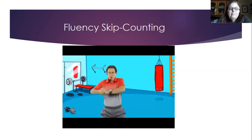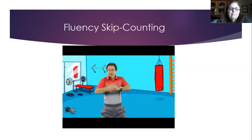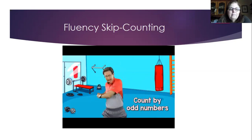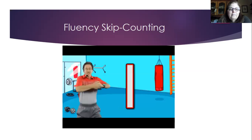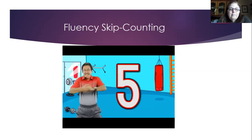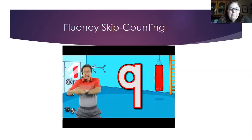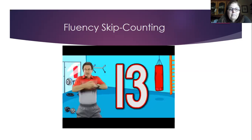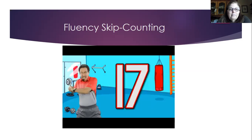Let's do washing machines — twist right and left now. Count by odd numbers. Work out and count: one, three, five, seven, nine, eleven, thirteen, fifteen, seventeen, nineteen.